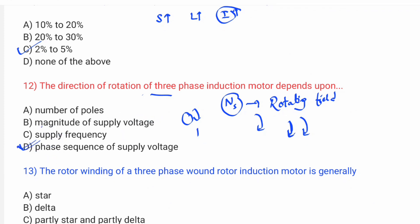For example, if the phase sequence is R-Y-B, the motor rotates clockwise. If you change one phase — making it R-B-Y — the phase sequence changes and the motor rotates anti-clockwise. When the phase sequence changes, the stator field flux direction changes, and therefore the rotor direction changes. Option D is the right answer.